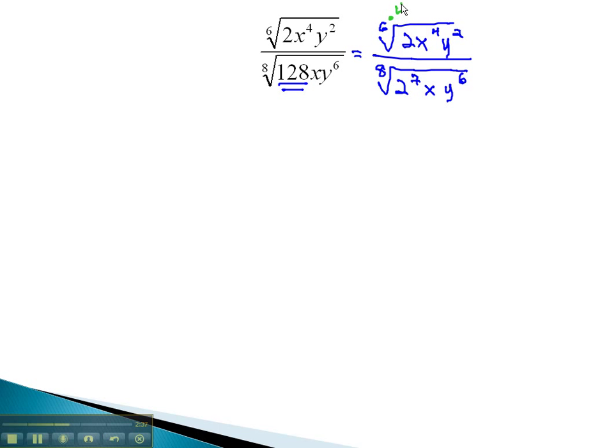We can do that by multiplying the index of 6 by 4, and the index of 8 by 3, and now everything's under a 24th root. We also must multiply our exponents by the same thing, so we have 2 to the 4th, x to the 16th, y to the 8th.